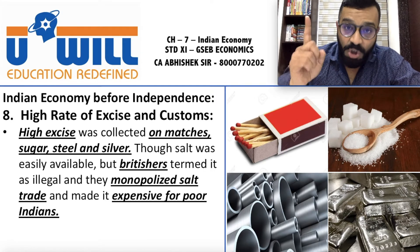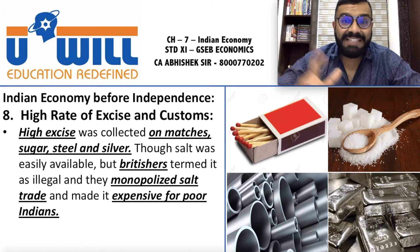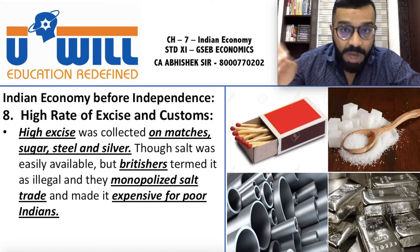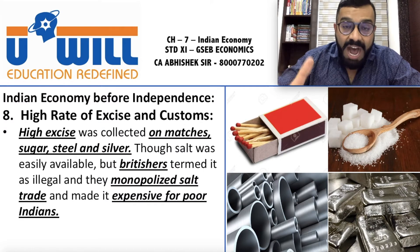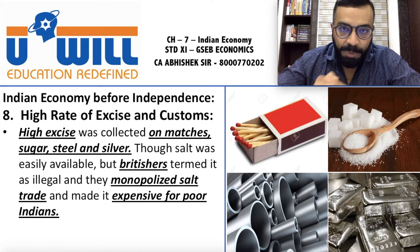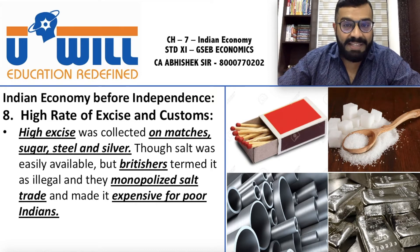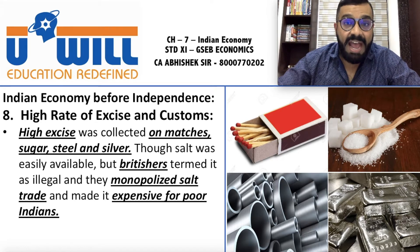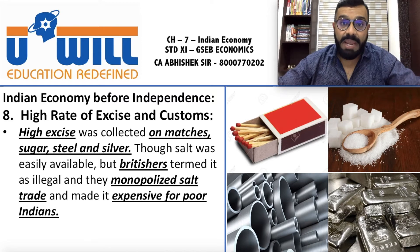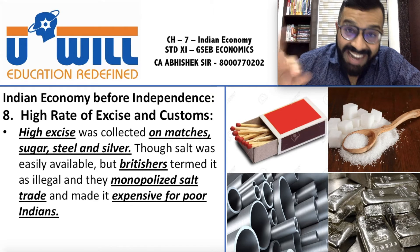Jo garib log hain unke paas sabzi bhi nahi hoti, daal bhi nahi hoti — toh woh khaate the roti, onions and salt. It was a very basic item consumed by the poor people. Salt in India was available on the seashores free of cost — wahan se hum salt ko extract karke, process karke, manufacture karke apne consumption ke liye istemal kar sakte the. Hum kar rahe the, aur yeh Britishers ko dikh gaya.